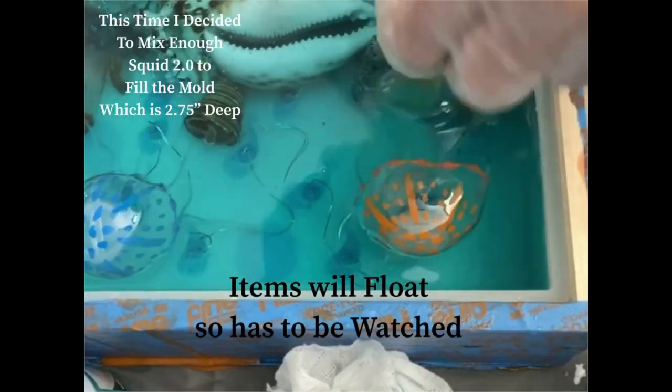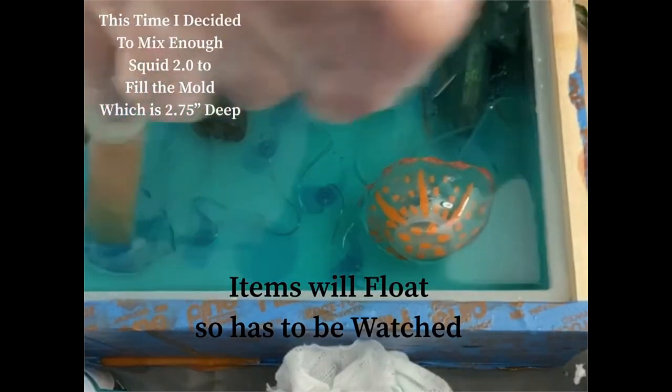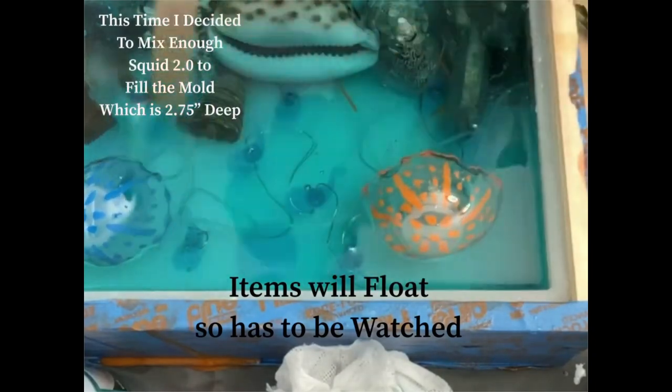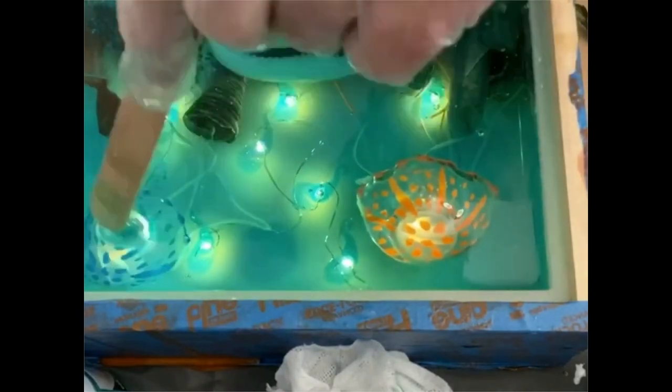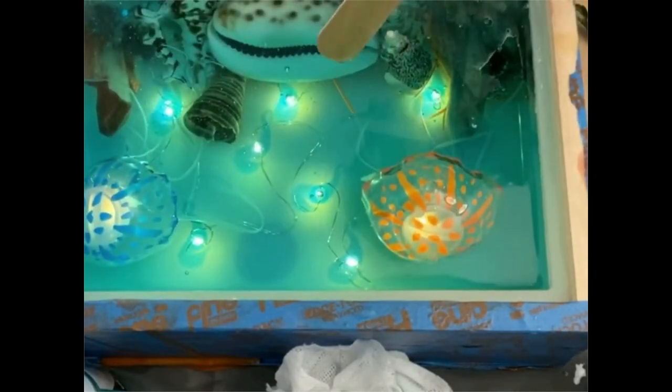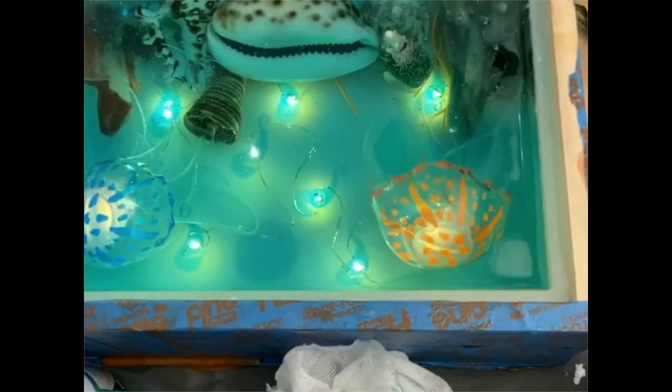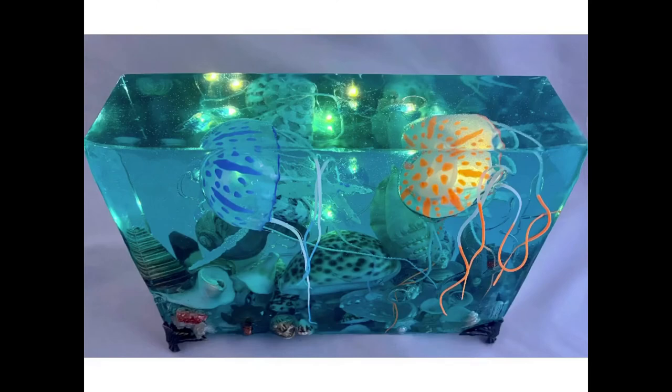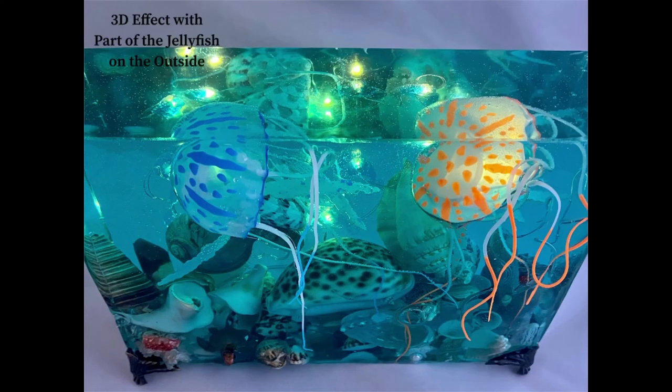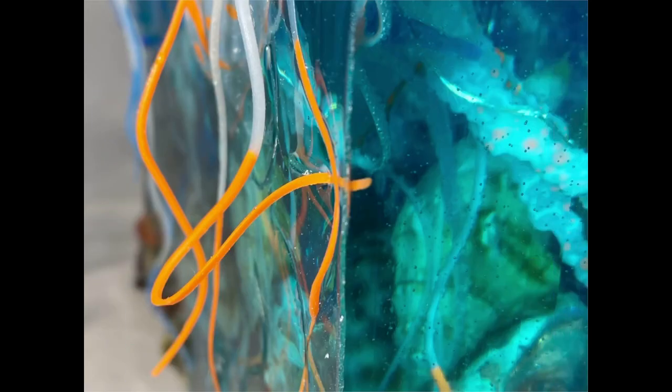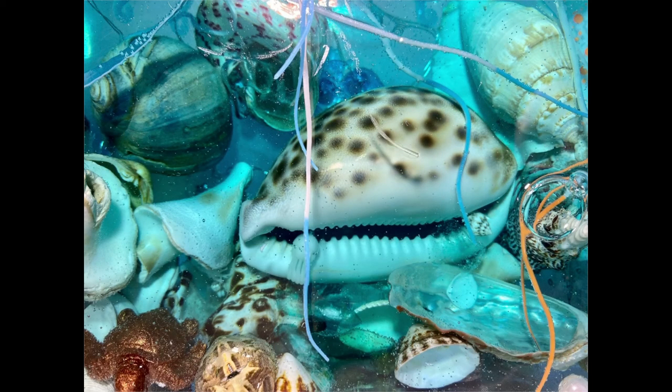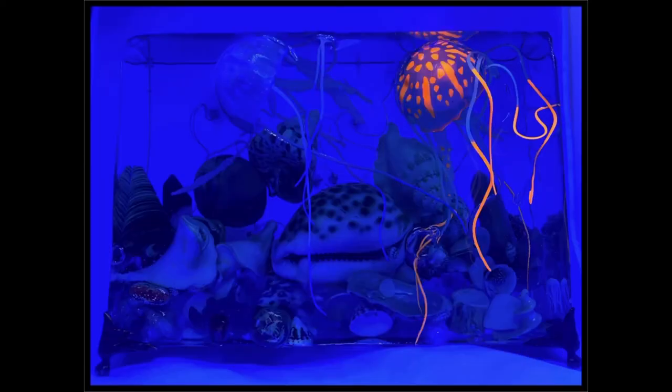This sculpture turned out very different from the first because I did one solid pour. So it allowed the jellyfish to actually float partially out of the mold and set and cure on top so that the tentacles can actually move outside of the epoxy resin. Love all of that.